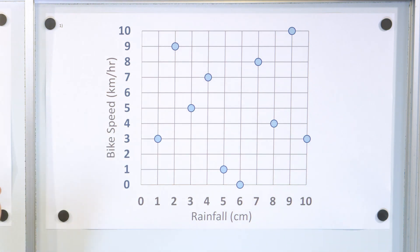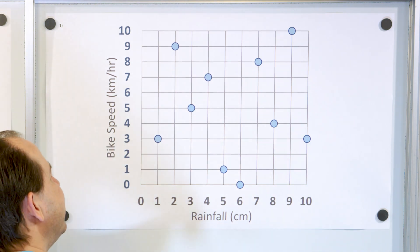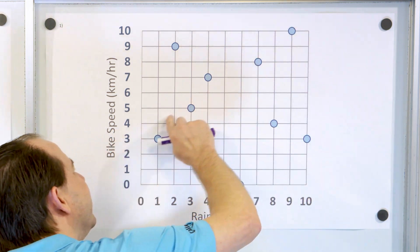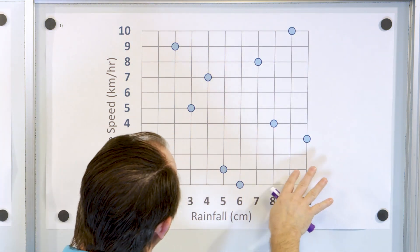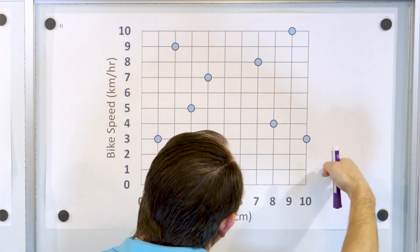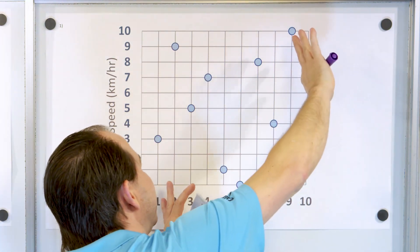My question to you is, is this correlated or not? Well, you might say I can draw data through here, but then there's all these outliers down here. But then you can say I could draw data through here, and then you have the outliers in the other direction.